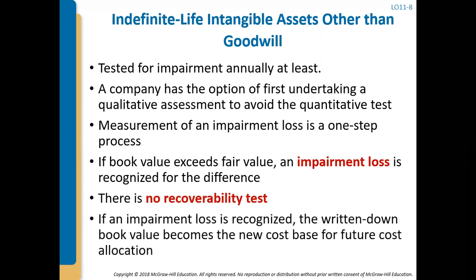If an impairment loss is recognized, the written-down book value becomes the new cost base for future cost allocation. So if you allocate the cost at all, it's going to be the new value that you've written it down to.